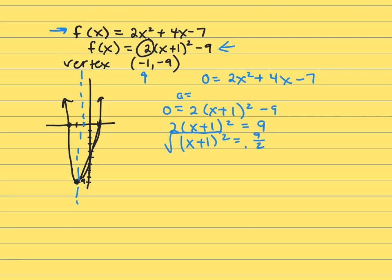And now take the square root of both sides. And of course that's going to give me plus or minus. So that leaves me x plus 1 equals the square root of 9 is 3 over the square root of 2. Of course it's plus or minus.